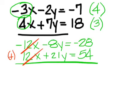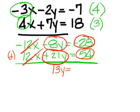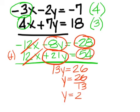But now I have to add negative 8y plus 21y. That is 13y. And negative 28 plus 54 is 26.